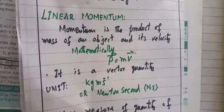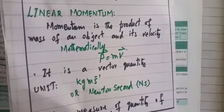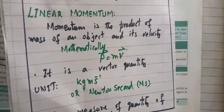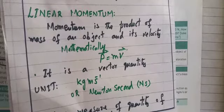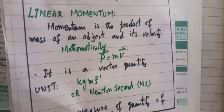Momentum, or linear momentum: momentum is the product of the mass of an object and its velocity. Simply put, the product of an object's mass and its velocity is called momentum. Mathematically: p = mv, where p is the symbol used for momentum, m is mass, and v is velocity.